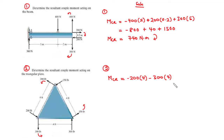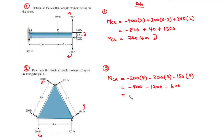Simplifying: negative 200 times 4 equals negative 800. Negative 300 times 4 equals negative 1200. Negative 150 times 4 equals negative 600. Negative 800 minus 1200 minus 600 equals negative 2600, which simplifies to negative 2.6 kilo Newton meters (after converting units from pounds to newtons and feet to meters). The negative value means the resultant couple moment acts in the anticlockwise direction.